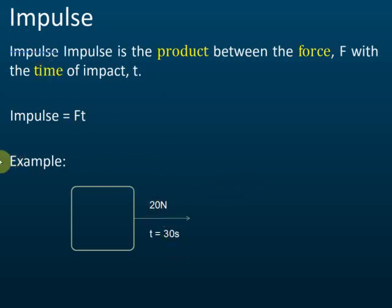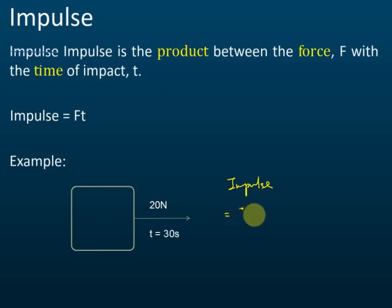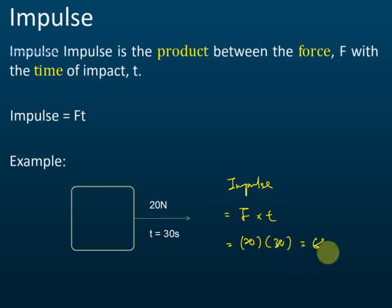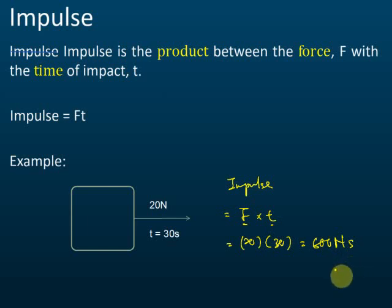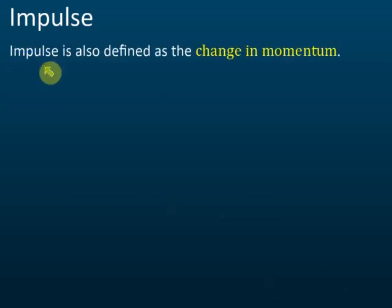What's the impulse? The impulse is equal to the force F times the time. The force is 20 newtons and the time is 30 seconds, so the impulse equals 600. The unit for force is newton and the unit for time is seconds, so it's 600 newton seconds. That is impulse.